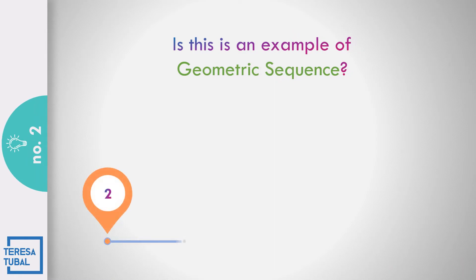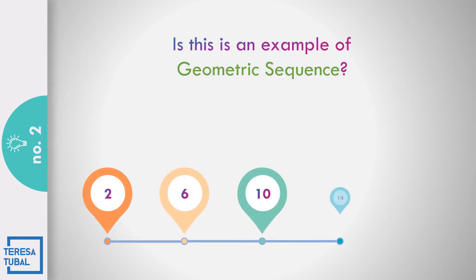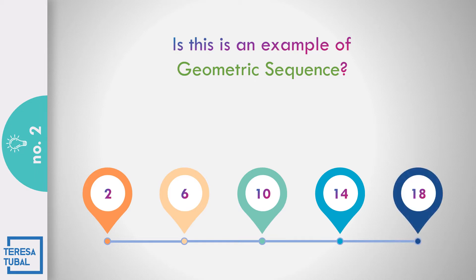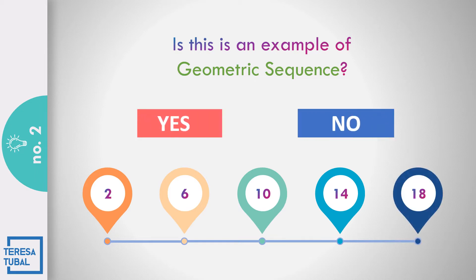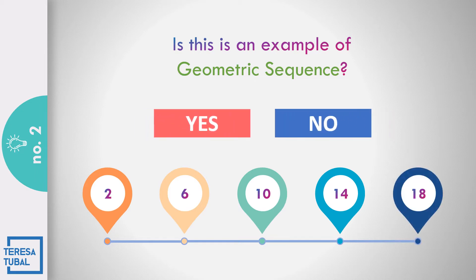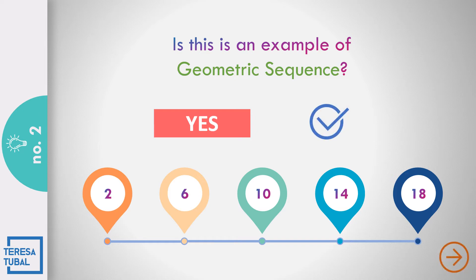How about number 2? Is this an example of the geometric sequence 2, 6, 10, 14, and 18? Correct! No, because there is no common ratio from first up to the last term.